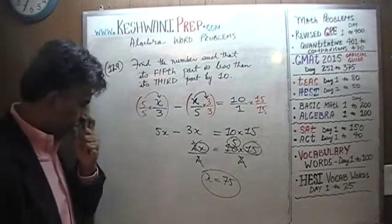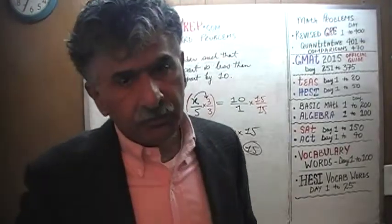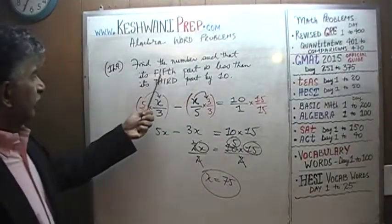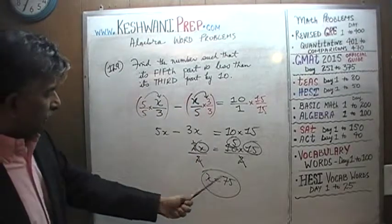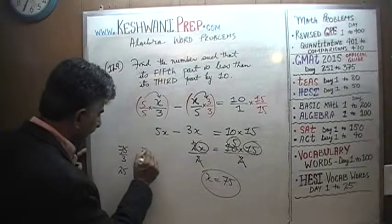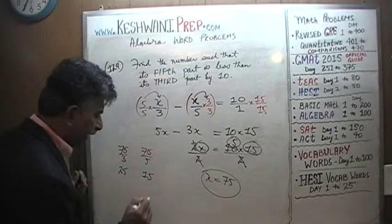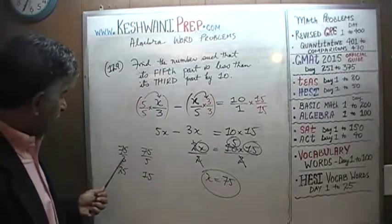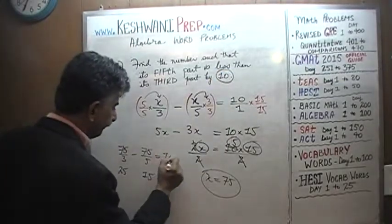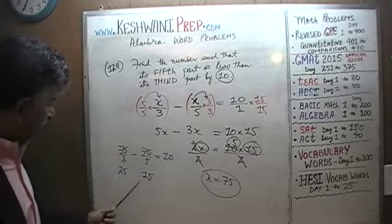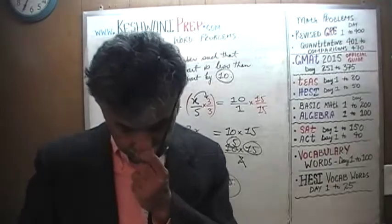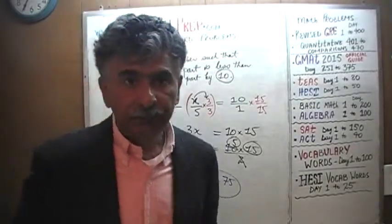We find that X equals 75. We need to verify our answer. A third of 75 is 25, and a fifth of 75 is 15. The problem says the third of the quantity exceeds the fifth by 10. Does it? 25 minus 15 is indeed 10, which means our answer is correct. Let's do one more!